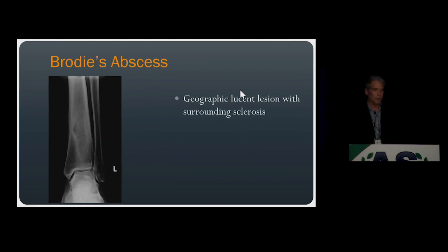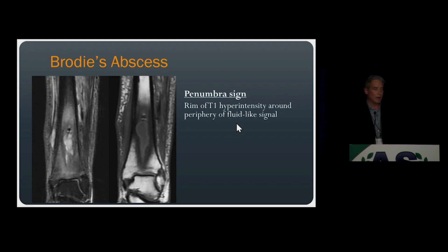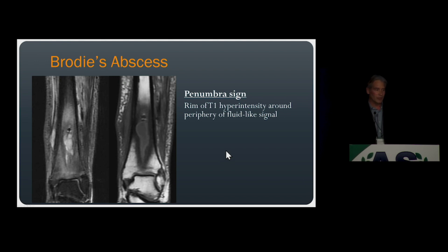The other type is Brody's abscess — an intraosseous abscess seen in the subacute to chronic stage of hematogenous osteomyelitis with a characteristic imaging appearance. On CT and radiographs, it presents as a geographic area of lucency, usually in the metaphysis, almost always with a surrounding sclerotic component. That sclerosis may be subtle on radiographs but is almost always apparent, representing the body's sclerotic response to infection. On MRI, Brody's abscess appears as fluid-like signal with variable bone marrow and soft tissue edema, and often exhibits the penumbra sign — a rim of T1 hyperintensity on pre-contrast imaging representing granulation tissue, which is very suggestive of an intraosseous abscess.